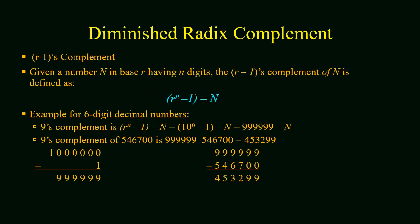Now we will study diminished radix complement or (r-1)'s complement, where r is the base of a number system. Let we have any number represented by capital N, where r is the base and n is the number of digits. The diminished radix complement will be r^n - 1 - N.